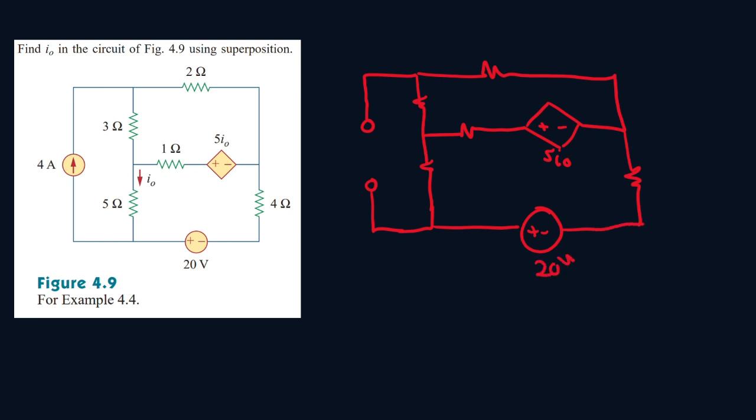So this one will be 20 volts. This one will be 1 ohm, this one will be 5 ohms, 4, 2, and 3. And I_O is moving in this direction.